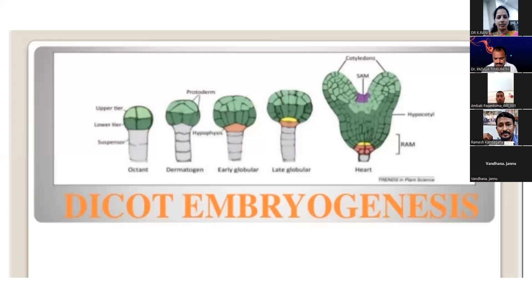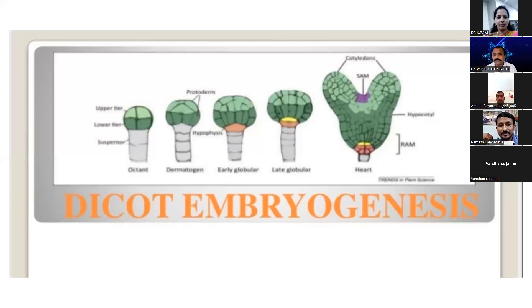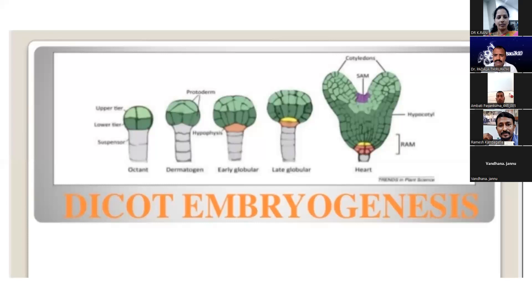The pollen tube of angiosperms — what does it contain? One male gamete, two male gametes, three male gametes, or none? The pollen tube of angiosperms contains two male gametes. One will fuse with the egg cell, and the other fuses with the polar nuclei, resulting in double fertilization and triple fusion.